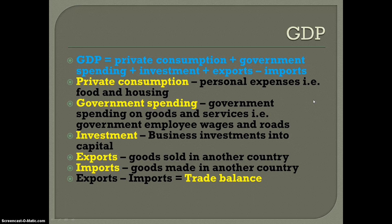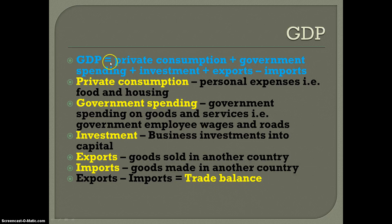GDP — what that is is it's private consumption, and this is kind of the formula to figure it out: private consumption plus government spending plus investment plus exports minus imports. In this case, exports minus imports — you could just substitute in 'trade balance,' and we'll find out what that means in just a minute.